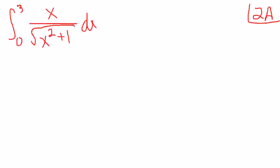Okay, 2a is our first definite integral. You should recognize u-substitution here. The derivative of what's inside the square root is something times x, and I have an x on the top.